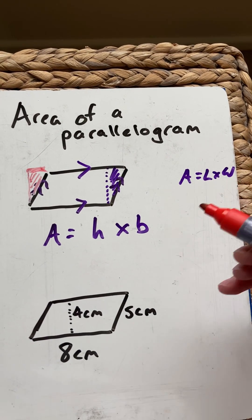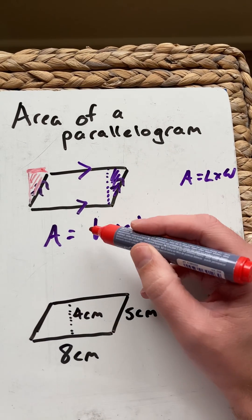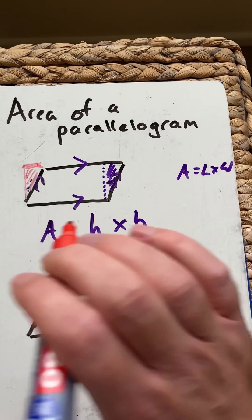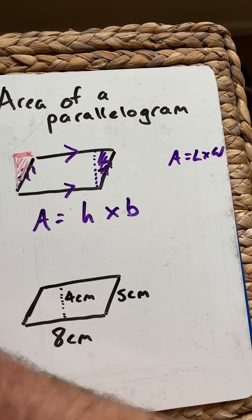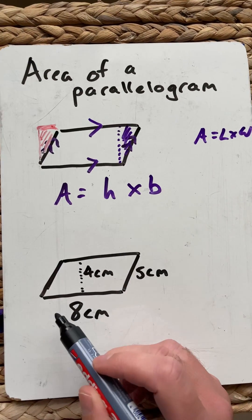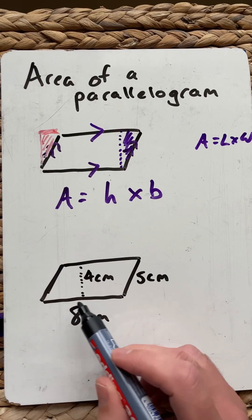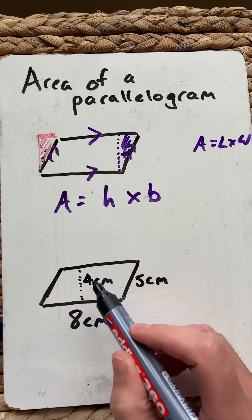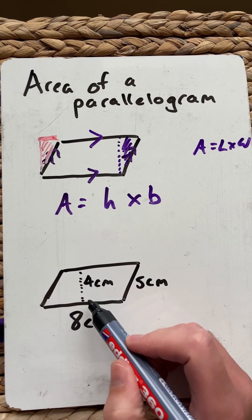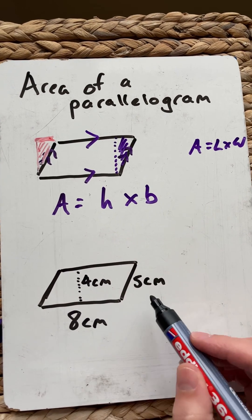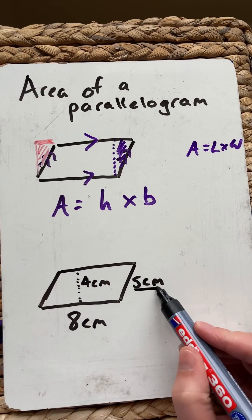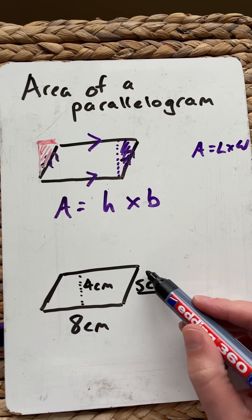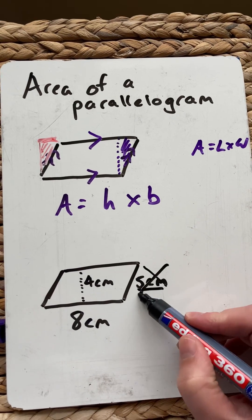So all we need to know is the perpendicular height and the base. Here we have a parallelogram with a base of 8 cm and a perpendicular height of 4 cm. Ignore the slant there — we don't need that for the area.